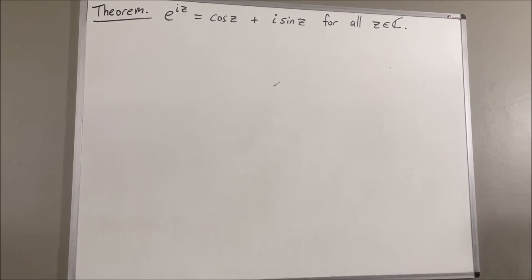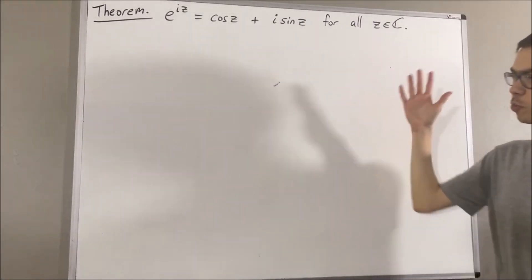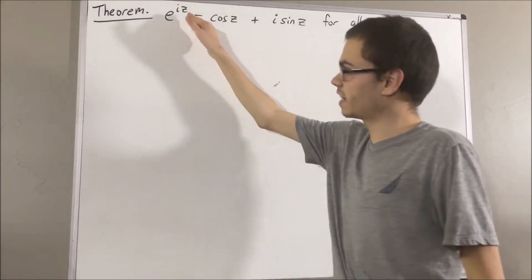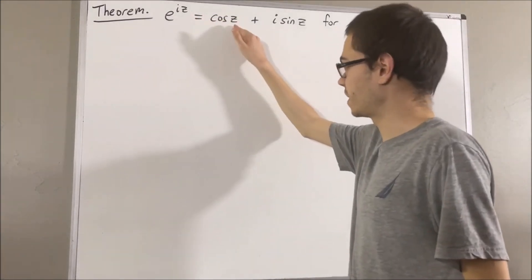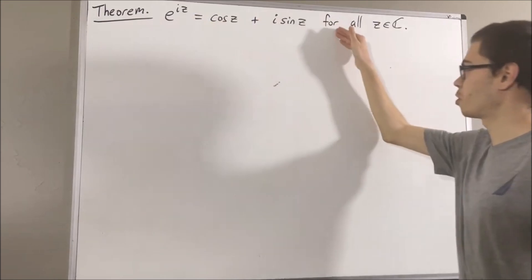Hello! In this video, we are going to prove the following theorem: e to the iz is equal to cosine of z plus i sine z for all complex numbers z.